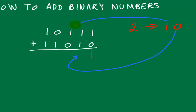And we carry the 1. So 0 and 1 — once again 1 plus 1 is 2, that's 1 0, so 0, carry the 1. 1 plus 1 once again is 2, which gives us 0 with a carry of 1. Now we have a 3 — in binary that's 1 1. So the answer is 1 1, and this is your answer.